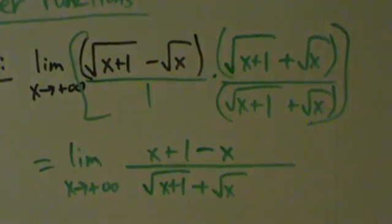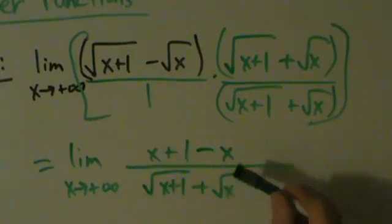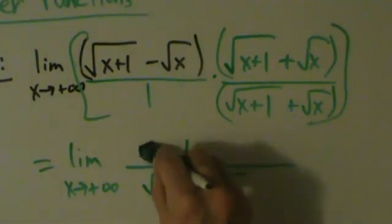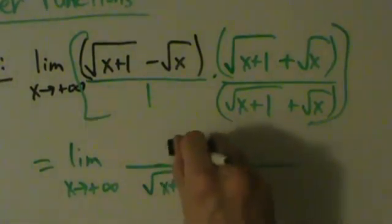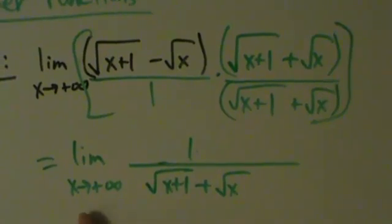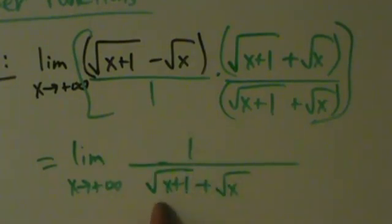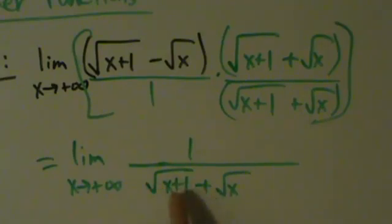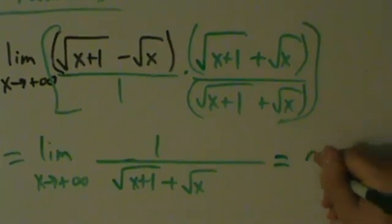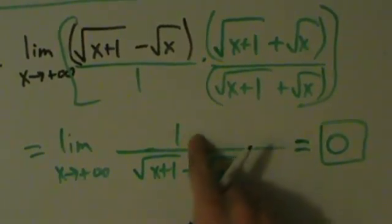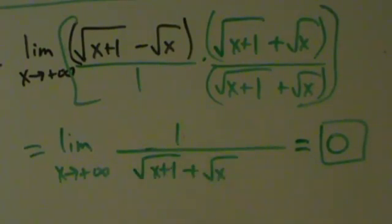Now when we simplify, on the top we have x+1−x, so x and −x cancel, leaving just 1. Now we can think about what happens as x shoots off to positive infinity. As x→∞, √(x+1)→∞ and √x→∞, so adding them together also goes to positive infinity. What we have is 1 divided by something going off to positive infinity. Since 1 divided by super huge numbers approaches 0, this limit equals 0.